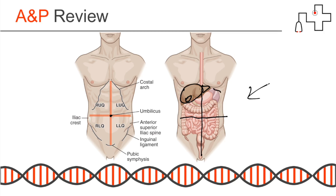Your spleen is in the left upper quadrant, and your appendix is down in the right lower quadrant. Right lower quadrant pain is very specific for appendicitis. That's why it's important to know these different locations. Now we're going to talk about the physiology of the GI system.